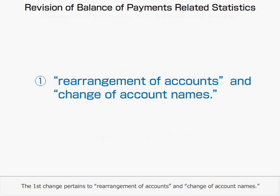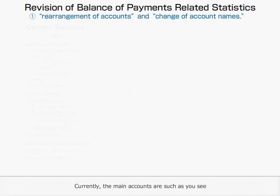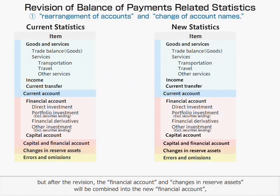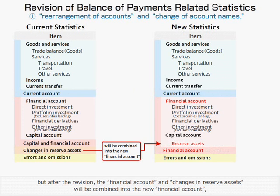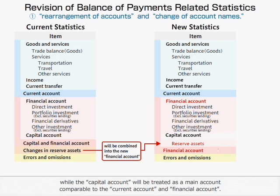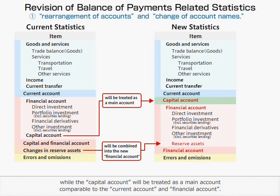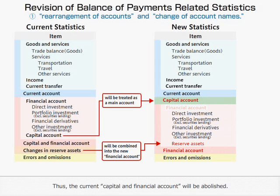The first change pertains to Rearrangement of Accounts and Change of Account Names. After the revision, the Financial Account and Changes in Reserve Assets will be combined into the new Financial Account, while the Capital Account will be treated as a main account comparable to the Current Account and Financial Account. Thus, the current Capital and Financial Account will be abolished.